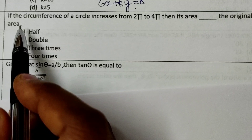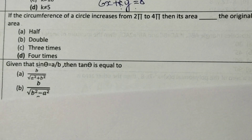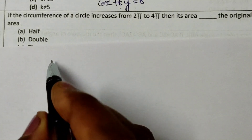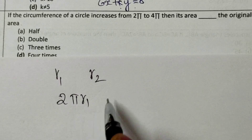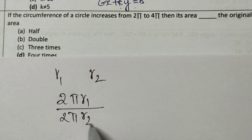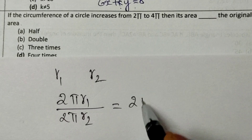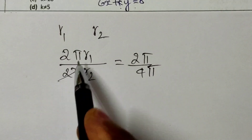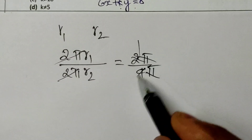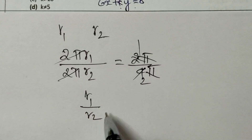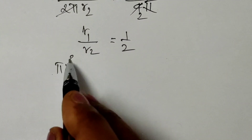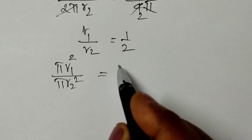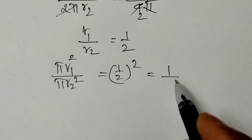The 25th question: if the circumference of a circle increases from 2π to 4π, then what happens to its area compared to the original? Let r1 and r2 be the radii. Circumference ratio: 2πr1 / 2πr2 = 2π / 4π, so r1/r2 = 1/2. Area ratio: πr1² / πr2² = (1/2)² = 1/4. So the new area is 4 times the original.